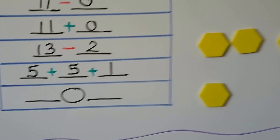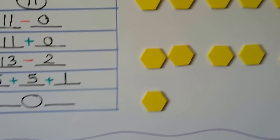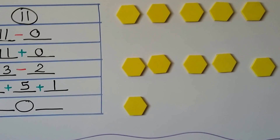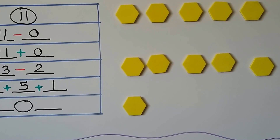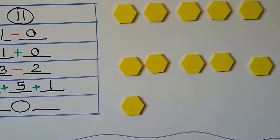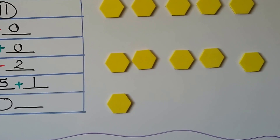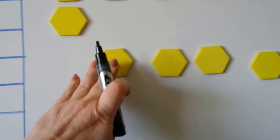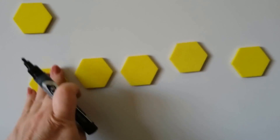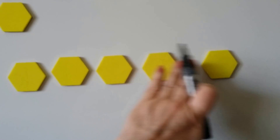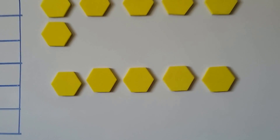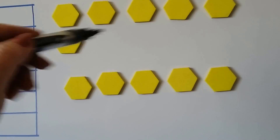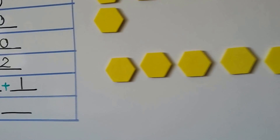Can we think of another one on our own, addition or subtraction? We could do 6 counters plus 5 counters — 6 plus 5 would still be 11.